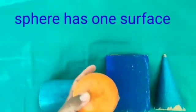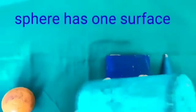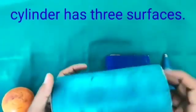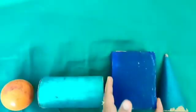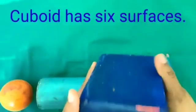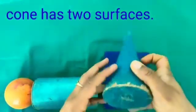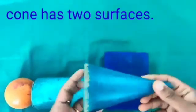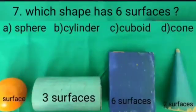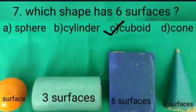Sphere. Sphere has only 1 surface. Cylinder has 3 surfaces. Cuboid. Cuboid has 6 surfaces. Cone. Cone has 2 surfaces. We will put a tick at option C.